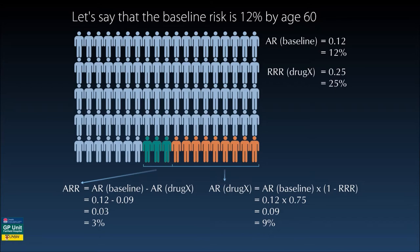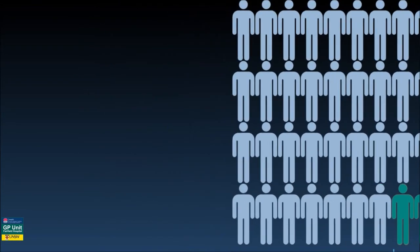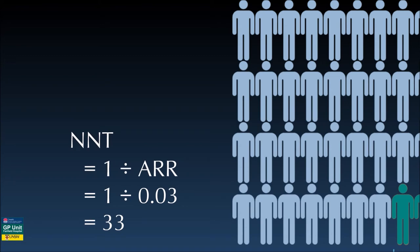So does drug X reduce the risk of condition Y by 25% or 3%? Both statements are correct depending on whether you mean relative or absolute risk. The number needed to treat, or NNT, is the inverse of the absolute risk reduction. In this scenario, 33 people will need to take drug X to prevent one from developing condition Y — an NNT of 33.